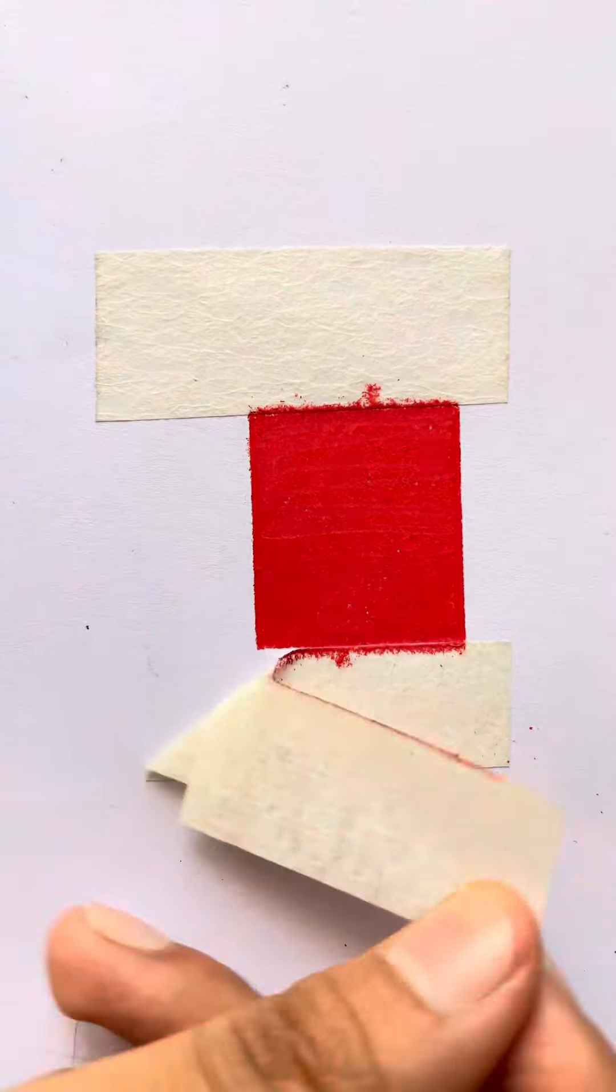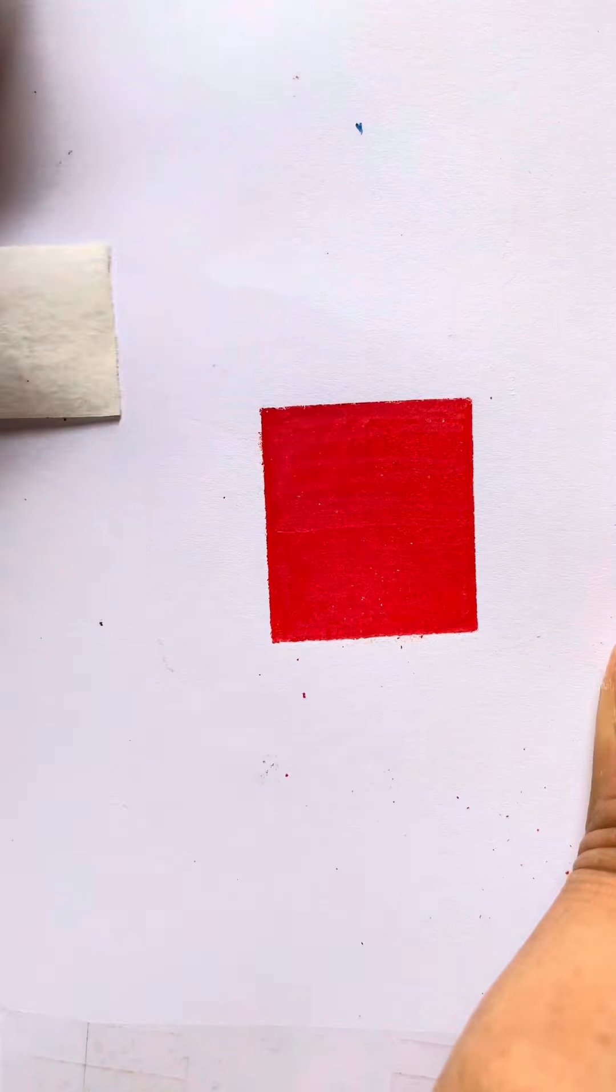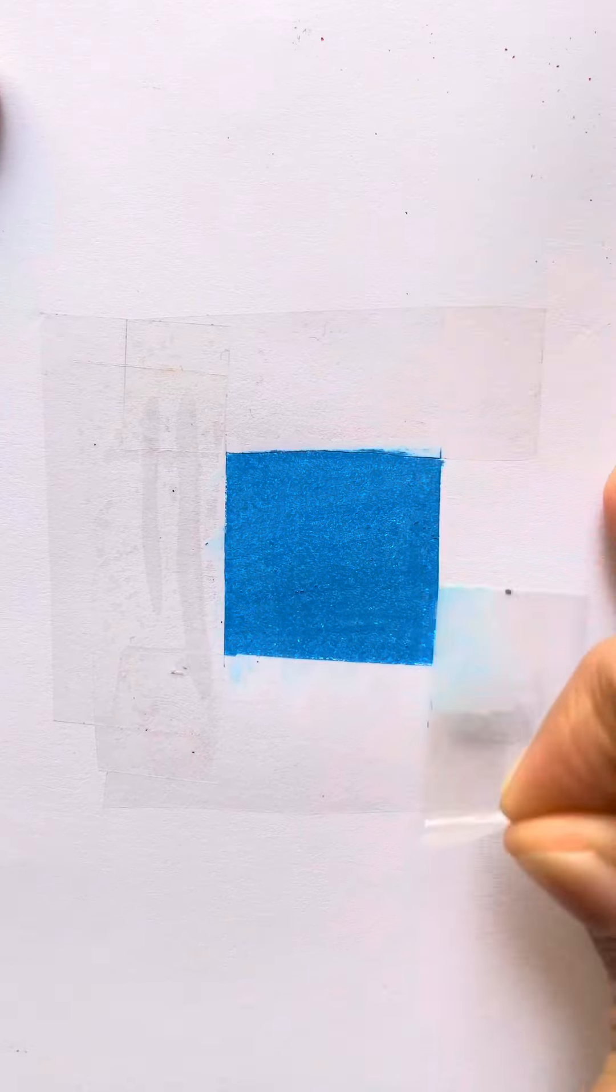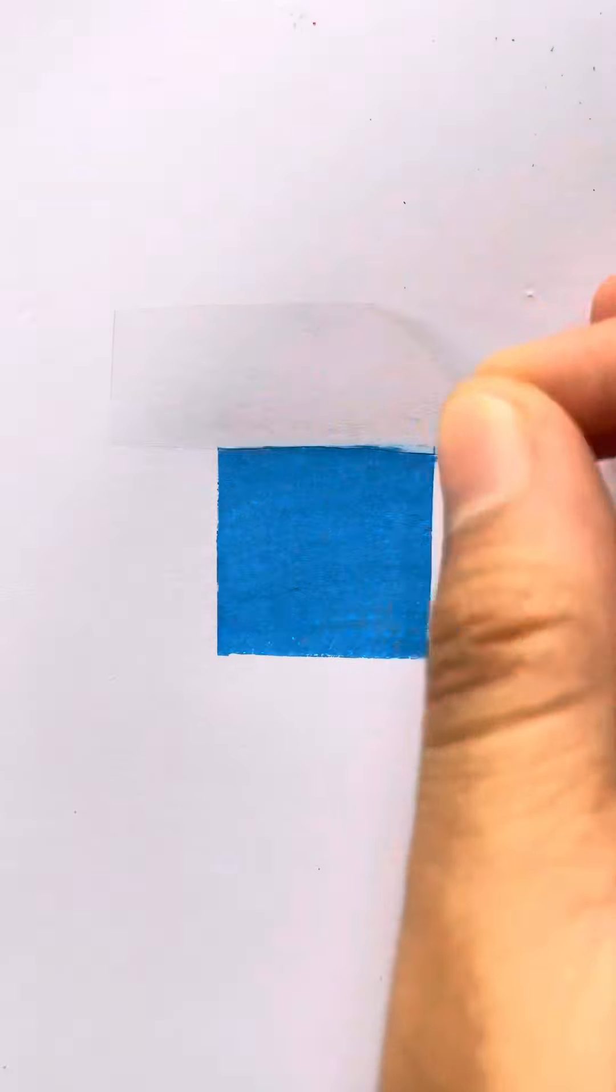This is what the drawing looks like after you have removed the masking tape. And here you can see I am removing the clear tape. You can also see how the paper is undamaged because we have decreased the strength.